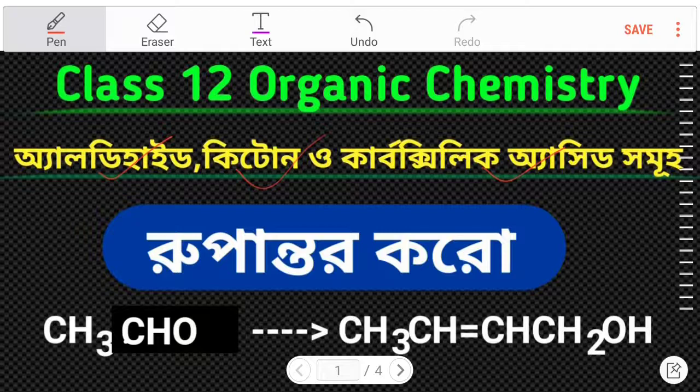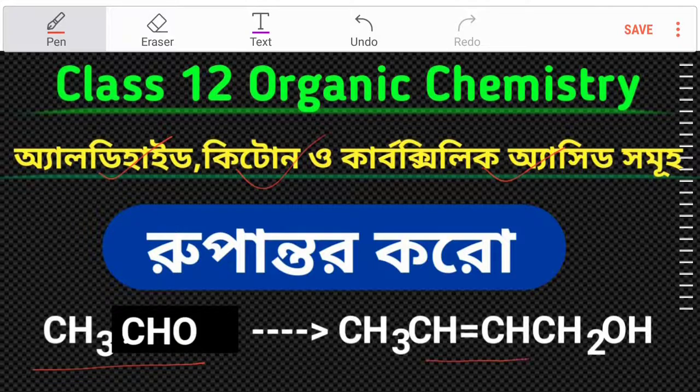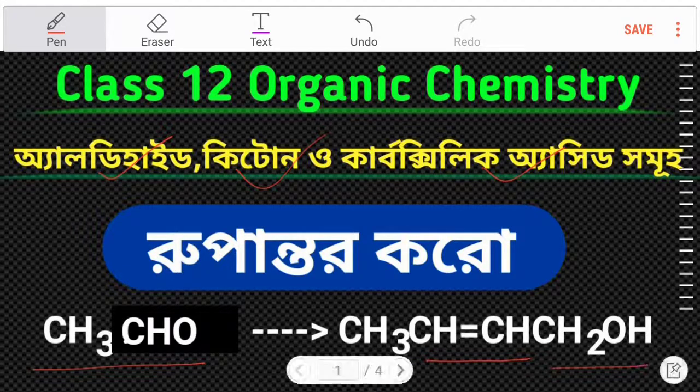Let's look at CH3CHO, the aldehyde, converting to CH3CH=CHCH2OH. This is called crotyl alcohol. The aldehyde forms crotyl alcohol.